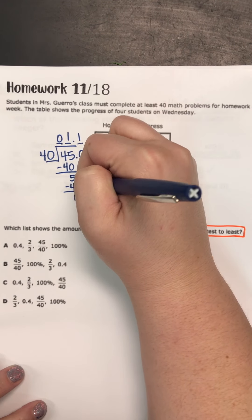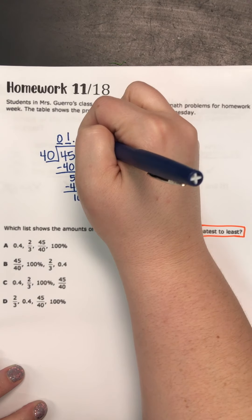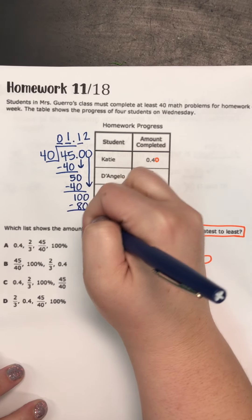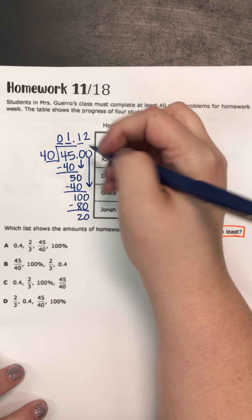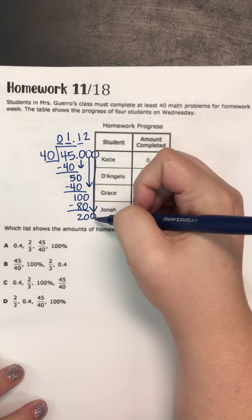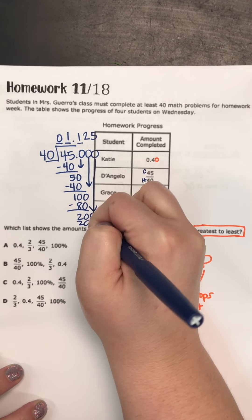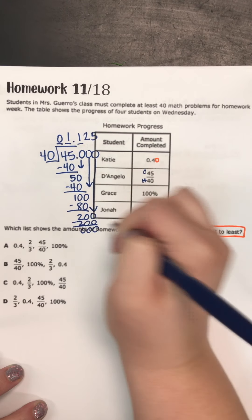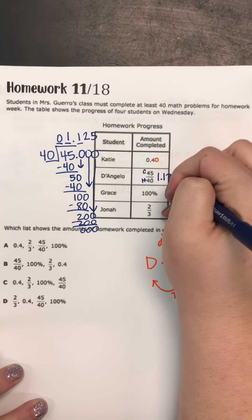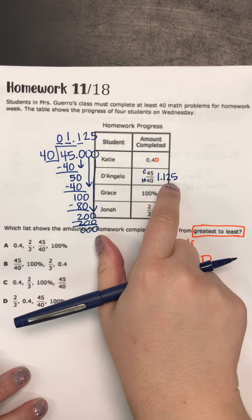Subtract and we get 10. Add another donut. 40 does go into 100 two times. It's going to be 80. We could keep going. So we're going to add another donut. We haven't zeroed out yet. 40 goes into 200 five times. And at that point, we reach our zeros. So this one is going to be 1.125. So there's a fraction. There's the decimal equivalent.